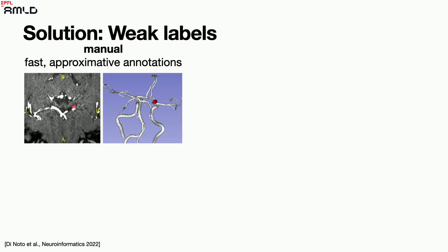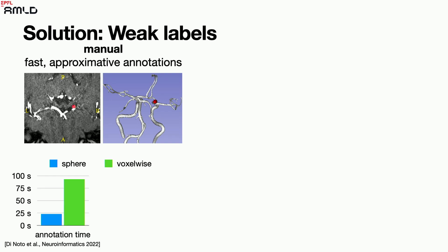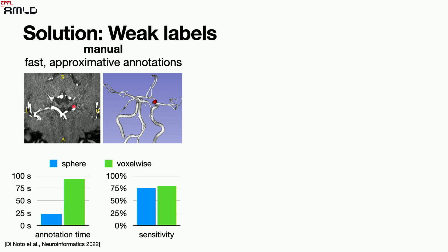One solution is weak labels. Instead of detailed paintings of lesions, you ask for fast, approximate annotations. For aneurysms, instead of painting precisely, we just ask for a big sphere around it. This takes around 25 seconds per aneurysm instead of about 100 seconds — about four times faster — meaning you can collect more data. You suffer a little bit in performance, but the drop is not statistically significant in our tests. So the message is: ask your physicians to do an approximate job, and the algorithm will figure it out.